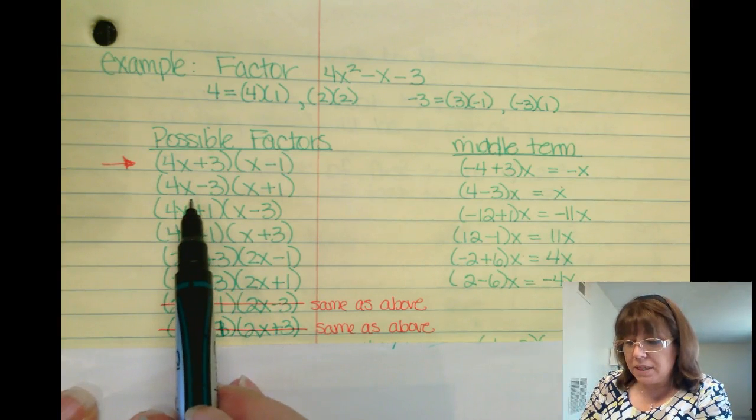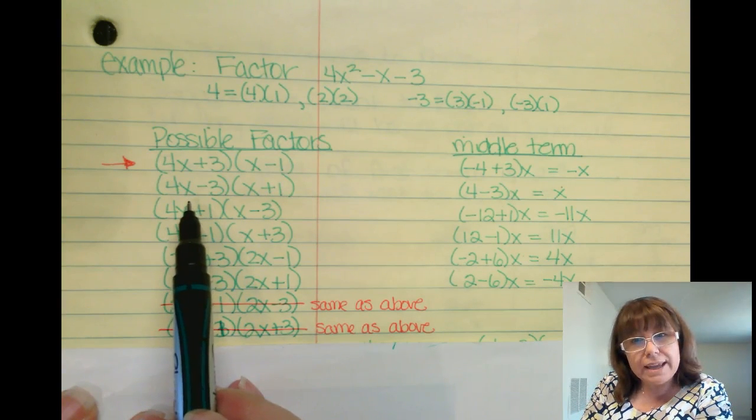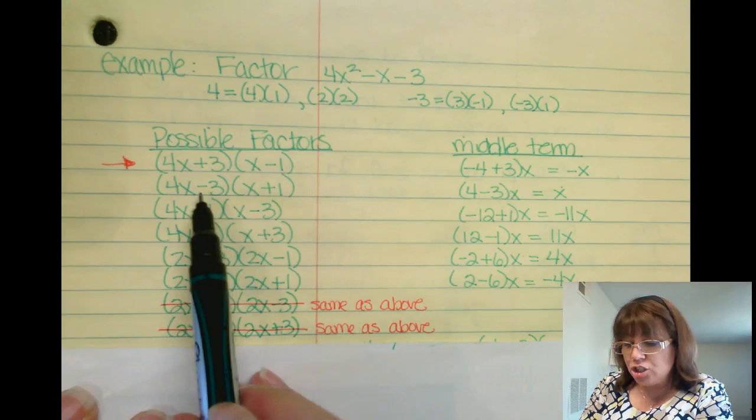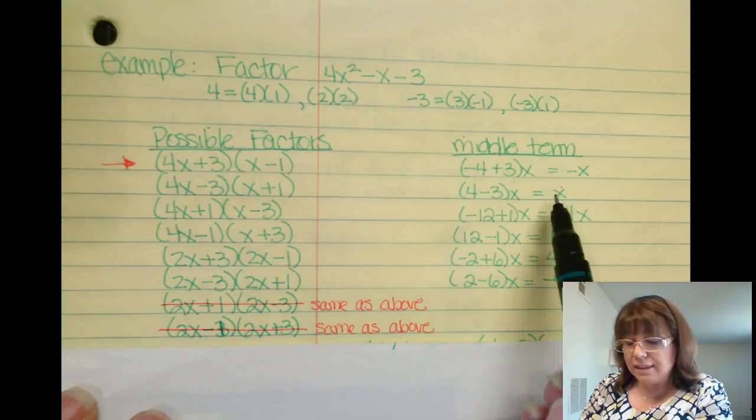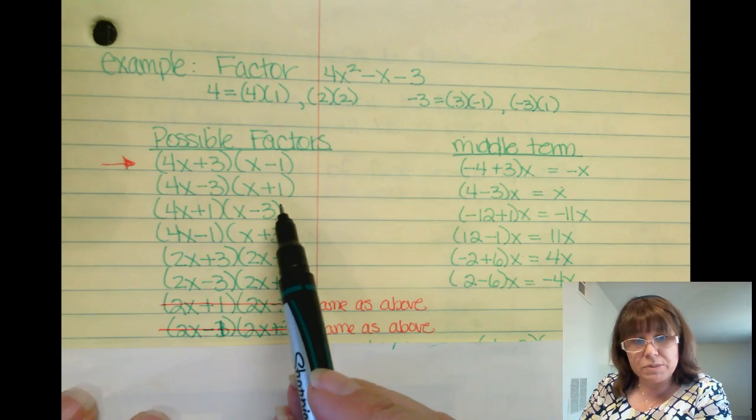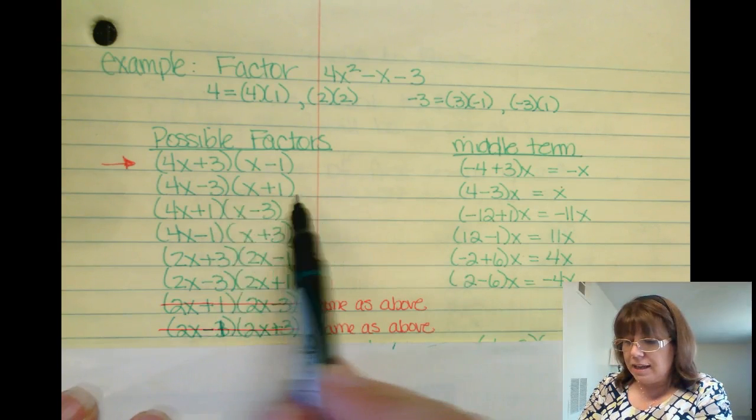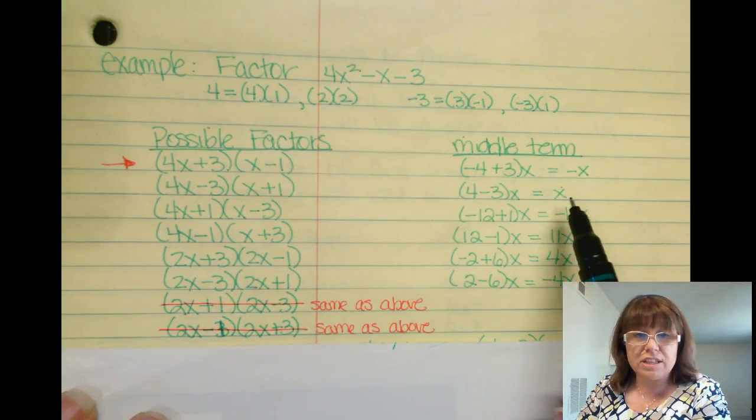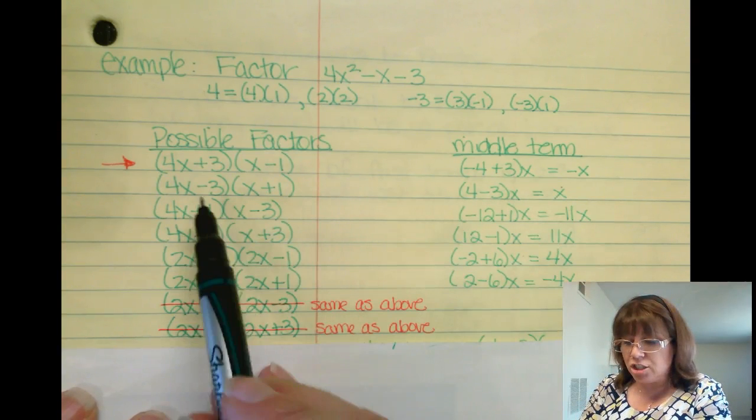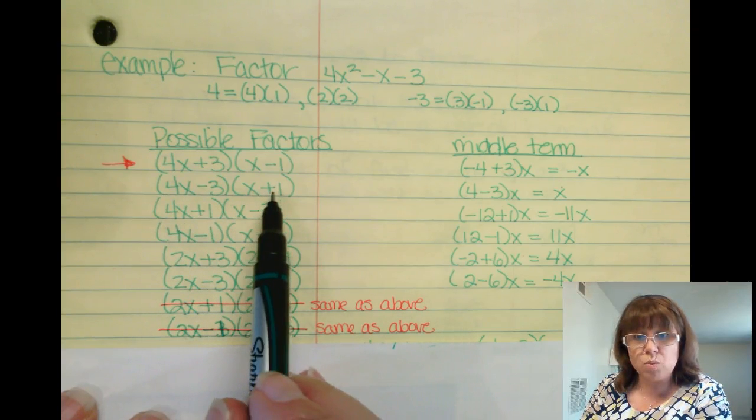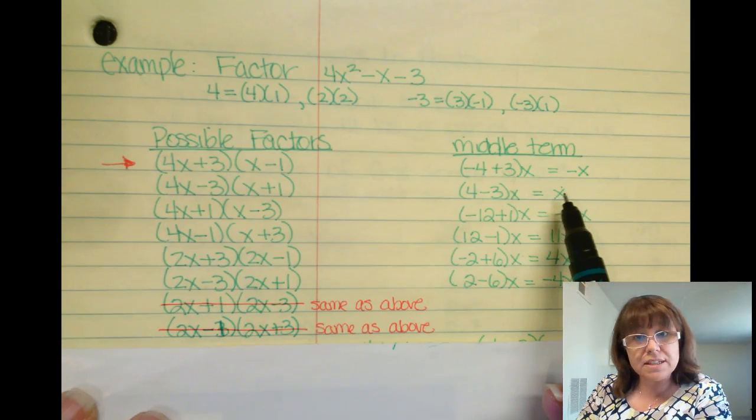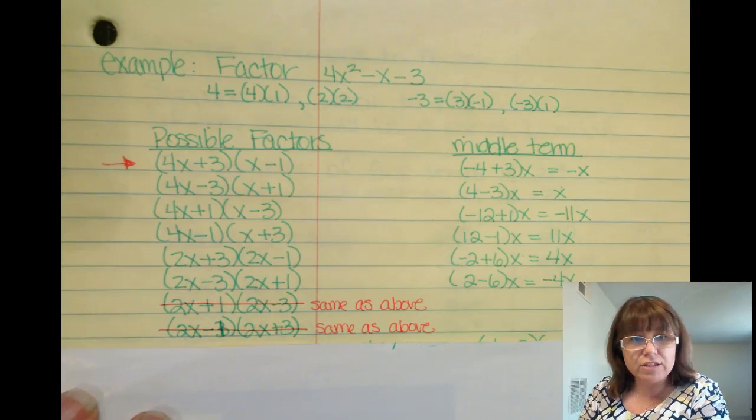But look at the other combinations and notice why it matters. If I change the signs, my sign changes. I left the numbers all in their respective places, but I ended up multiplying and I actually got the opposite. So that's a good clue that if by chance you tried 4x minus 3 and x plus 1, and you got the opposite sign of what you're looking for, just flip the signs and then you'll have your answer.